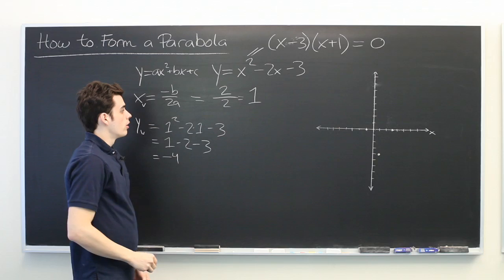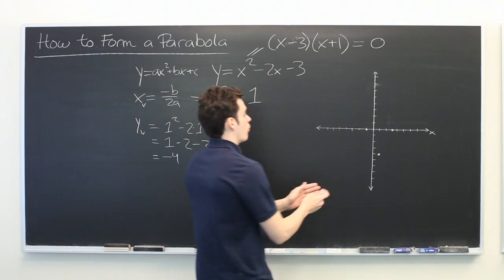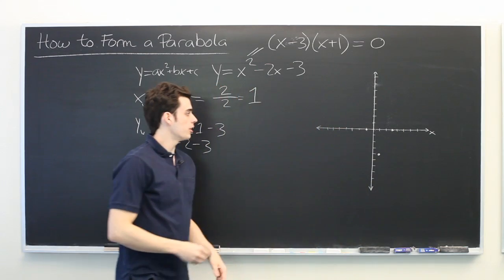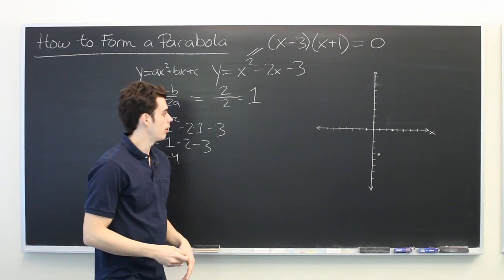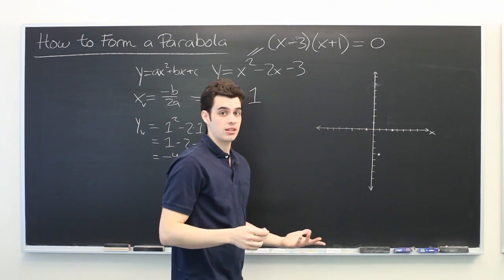Excellent. So now that we have these key pieces of information, we have a general idea of what the shape of the parabola is going to be. Let's give ourselves two more points to work with. We plug in x equals 0, which is always a very easy one to evaluate.